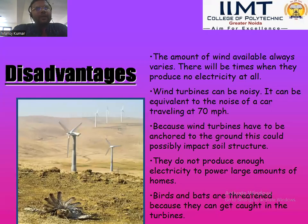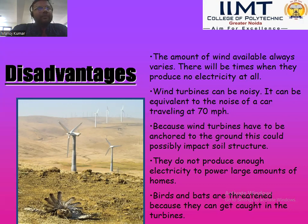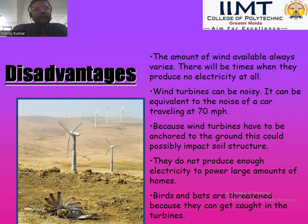Disadvantages of wind power: The amount of wind energy available always varies — there will be times when they produce no electricity at all. Wind turbines can be noisy, equivalent to the noise of a car traveling at 70 mph. Because wind turbines have to be grounded, this could possibly impact soil structure. They do not produce enough electricity to power large numbers of homes. Also, birds and bats can be killed because they get caught in the turbines.